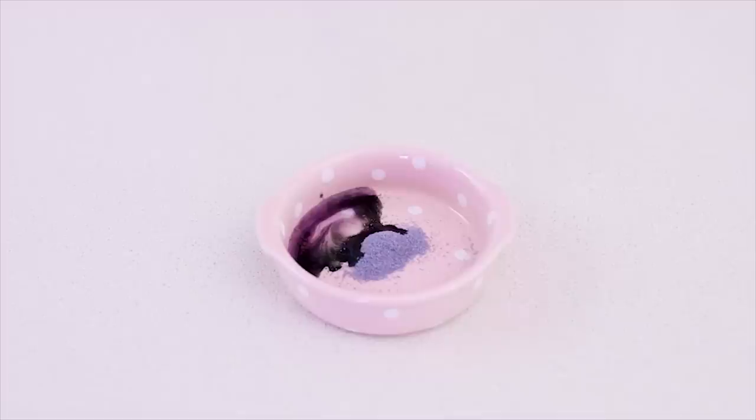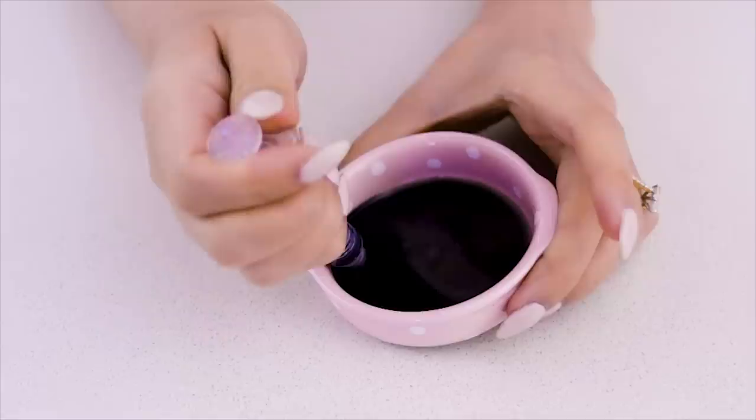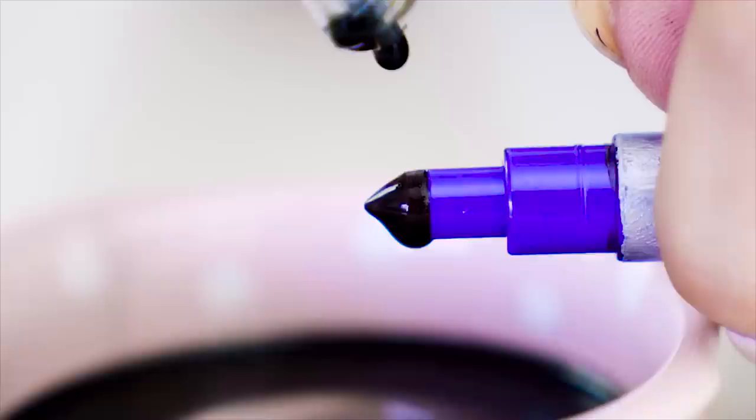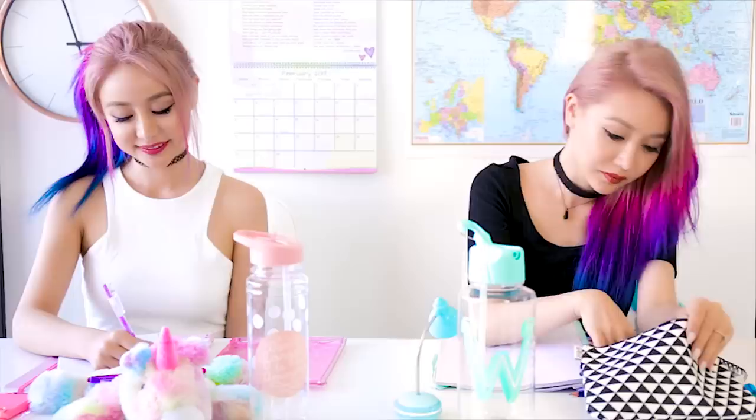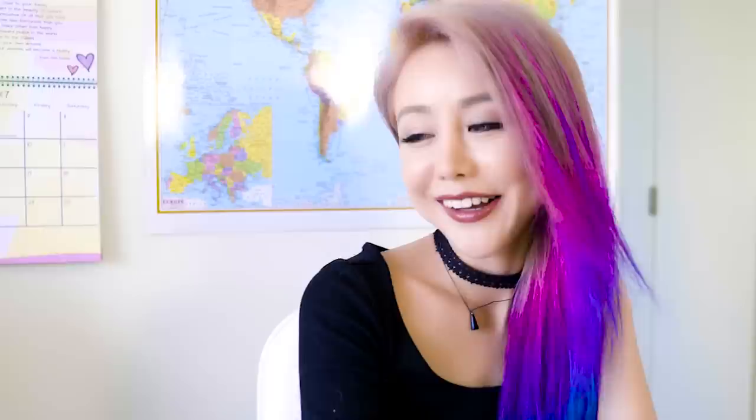Now pour some Kool-Aid in a similar color in a container and add a tiny bit of water to dilute it, but not too much. We want this to still be quite strong tasting. Grab a syringe and drip some of this flavoring onto your pen tip. You can also try soaking the tip in it. Now you have a super tasty edible Kool-Aid sharpie. You can make all different kinds of flavors and feel free to color your tongue and draw patterns on it. It's going to be super safe and tasty.